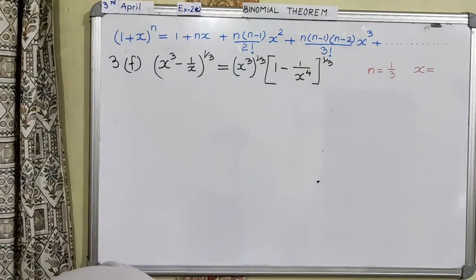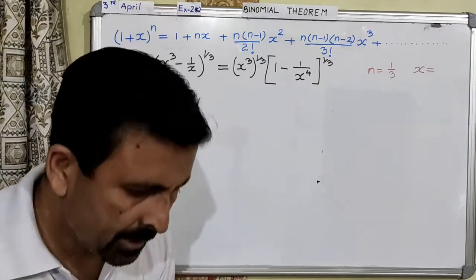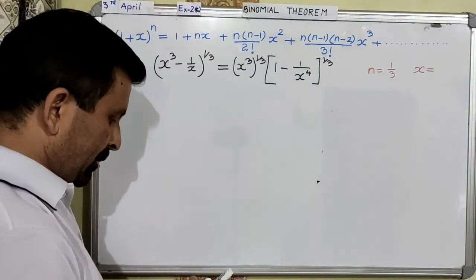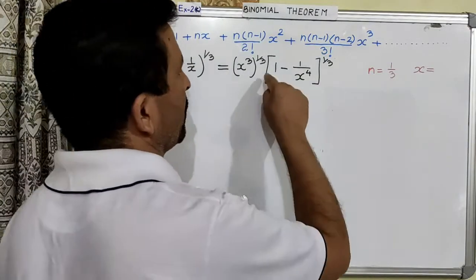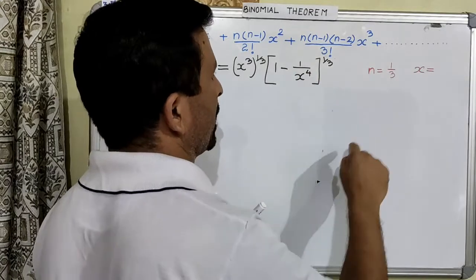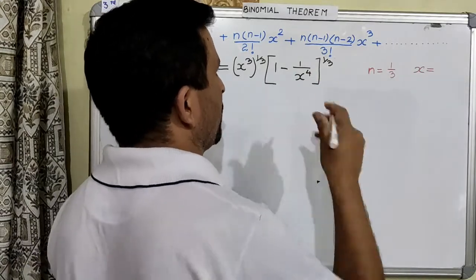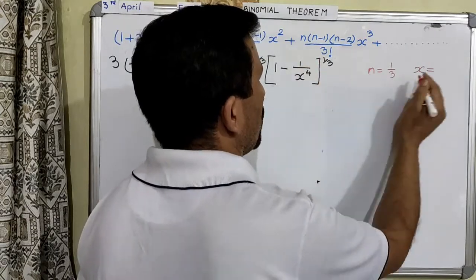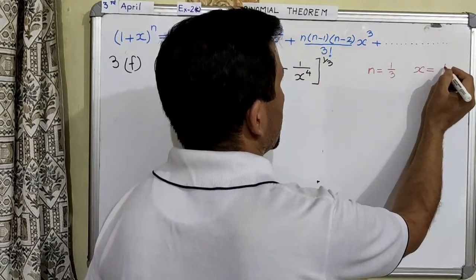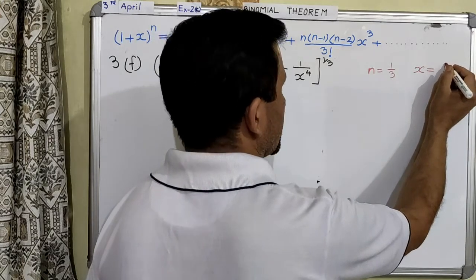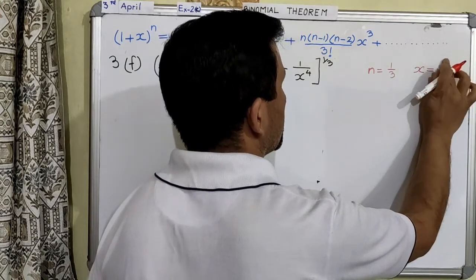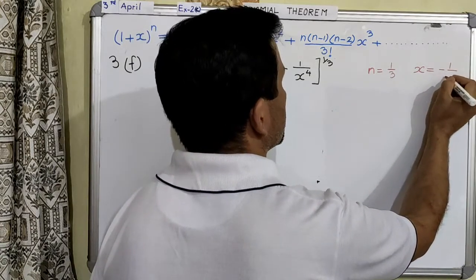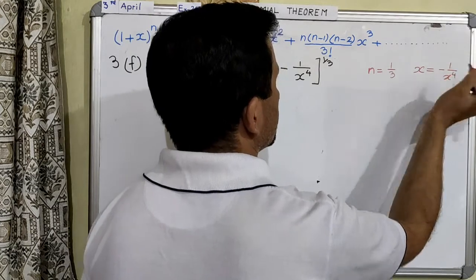Hope this is very clear to you all. Now after doing this, for this binomial we will write down the value of n and the value of x. The value of n is the degree, which is equal to 1 over 3. And the second term — we will write this second term as minus 1 over x to the power 4. So this is your second term and now we can start.